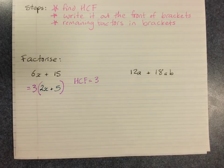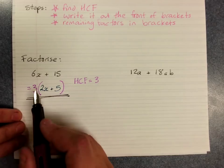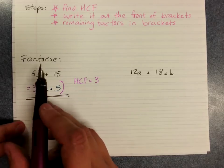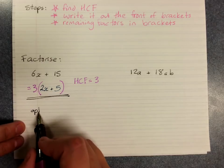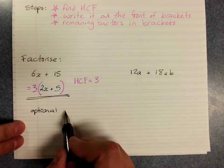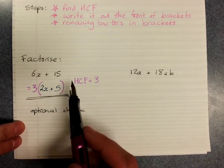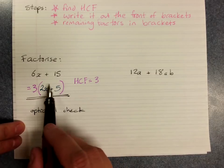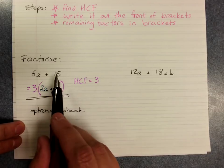Now there's a check that you can do. This is not part of it. This is the answer when you've been asked to factorize. Take an expression and put it into brackets. But an optional check. Because factorizing is the opposite of expanding, if you expand this back, if you've done it correctly, you'll get this.